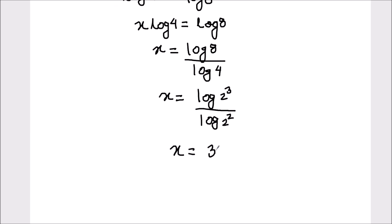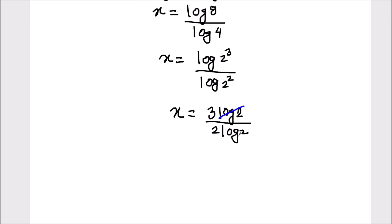This can be written as 3 log 2 divided by 2 log of 2. So here log 2 and log 2 gets cancelled.